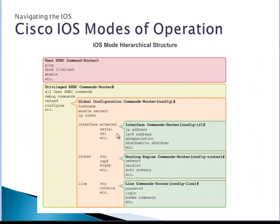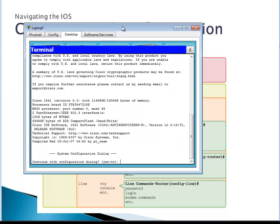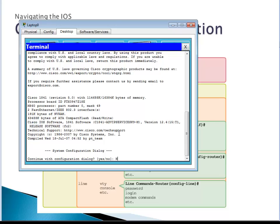Once we're inside the router, the first mode we are in is called user mode or user exec mode. In this mode it's very limited — you can do a few pings, a few show commands, and you can move to a different mode, but it's very limited. This message about continuing with the configuration dialogue will display if there's no startup configuration. If the startup configuration is missing or hasn't been configured, you will get this message. If you have a startup configuration, you will not get this message.